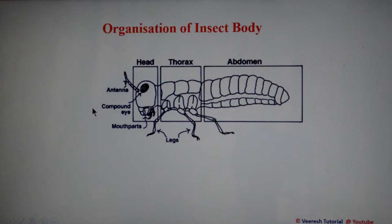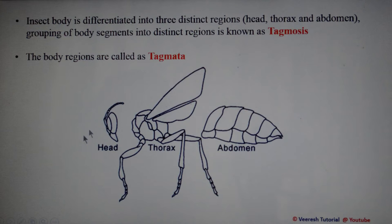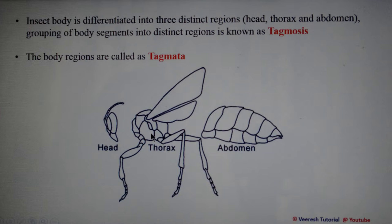In this video, I will be discussing the organization of the insect body. The insect body is differentiated into three distinct regions: head, thorax, and abdomen. The grouping of body segments into distinct regions is known as tagmosis — the differentiation of body into distinct functional regions. These body regions are called tagmata: the head is the first tagma, thorax is the second tagma, and abdomen is the third tagma.